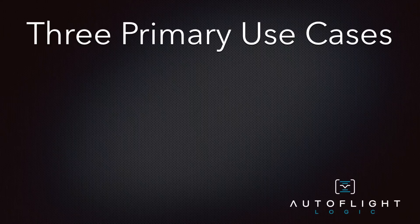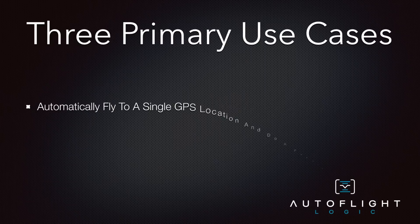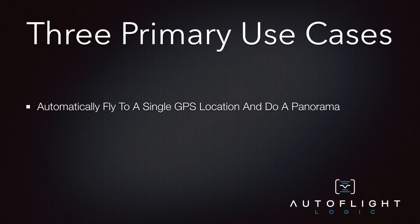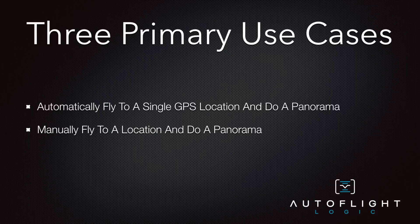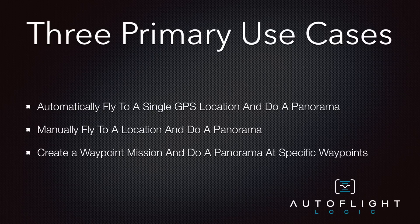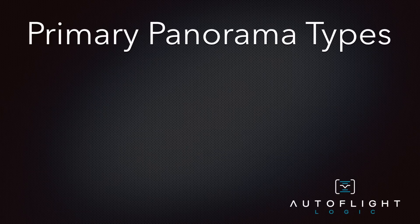There are three primary use cases for creating panorama pictures in Autopilot. The first, where you select a location on a map and have the quadcopter fly to that location and do a panorama. Second, where you fly to an individual location manually and let the Autopilot software do the panorama there. Or third, using waypoint mode to fly to more than one location and then do a panorama at the selected waypoints. Within Autopilot, there are three types of panoramas that you can easily do and then further customize into a custom setting.